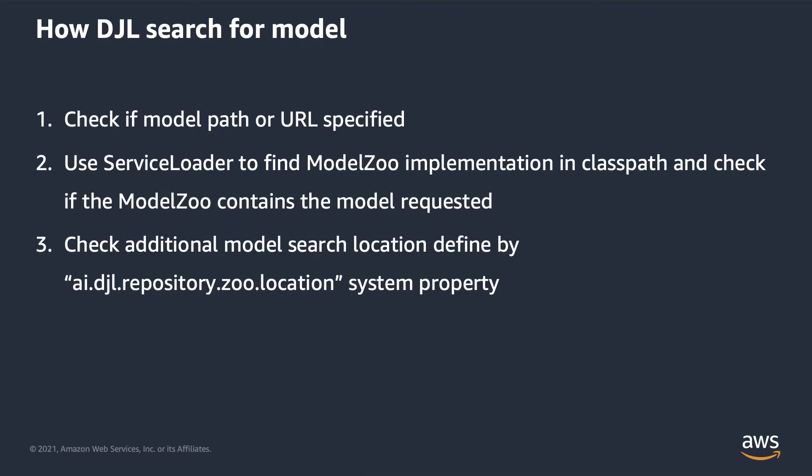Finally, DJL will search for additional locations defined by the system property ai.djl.repository.zoo.location, so you can specify multiple locations in that system property.